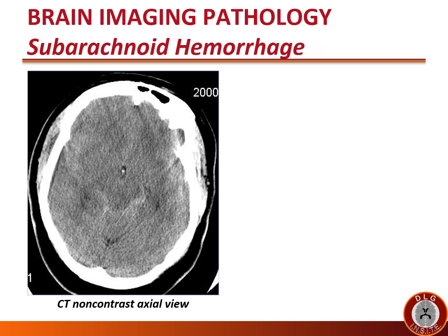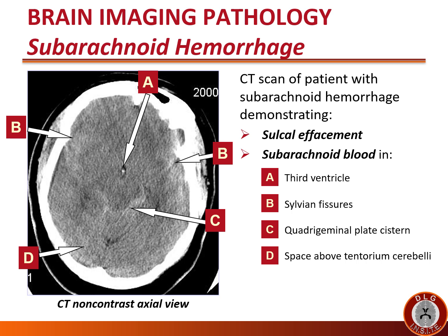This non-contrast CT from a different patient with subarachnoid hemorrhage shows blood in the third ventricle (labeled A), in the sylvian fissures (labeled B), in the quadrigeminal plate cistern dorsal to the midbrain (labeled C), and in the space above the tentorium cerebelli (labeled D). In addition, there is sulcal effacement — the sulci are not seen at all in this image due to increased intracranial pressure that occurred as a result of the subarachnoid hemorrhage.